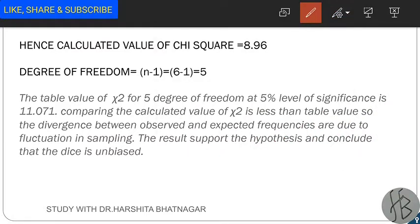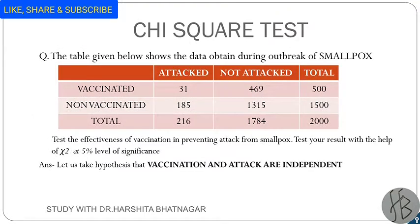Next, we study a question based on the test of independence. The question gives how many people were attacked and not attacked depending on whether they were vaccinated or non-vaccinated. A 2×2 contingency table is given. We apply the test of independence to check whether vaccination is effective in preventing the attack from smallpox, tested at 5% level of significance. The hypothesis is that vaccination and attack are independent.